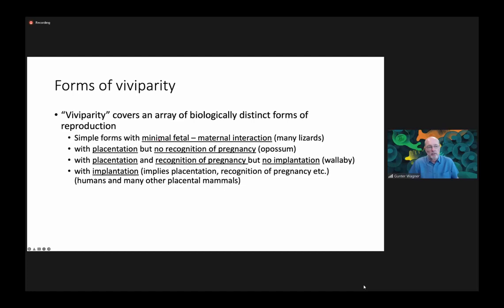A simple form with minimal fetal-maternal interaction, as we see in many lizards where there's technically placentation but no recognition of pregnancy, like we see in the opossum. Then there are forms that have placentation and recognition of pregnancy but no implantation, for instance in the wallaby. And then viviparity with implantation, which implies placentation, recognition of pregnancy, and all the other complications — that's the situation we know from humans and many other placental mammals.